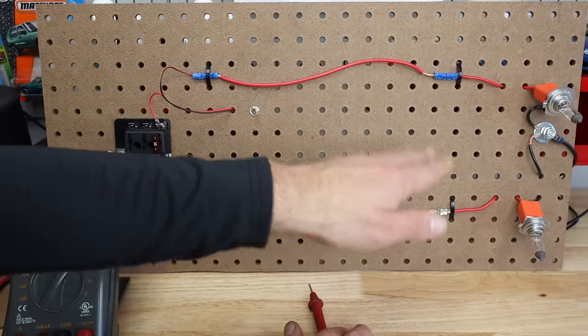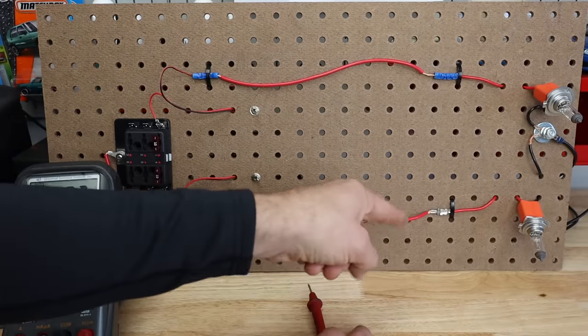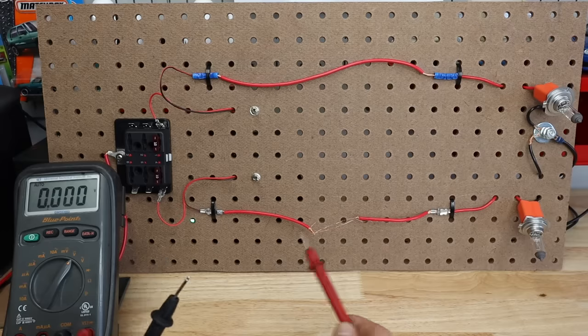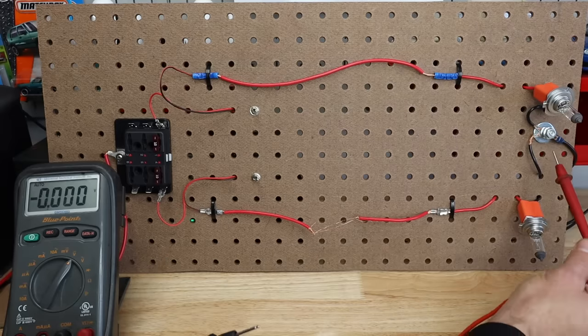What if this wasn't a lighting circuit? What if this was a 5 volt reference circuit and you had that 0.25 volt drop? It's a considerably higher percentage of overall voltage than it is on a 12 volt circuit.